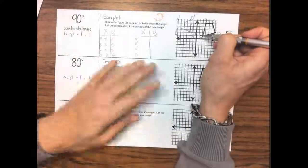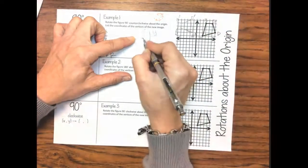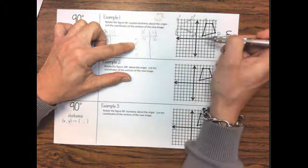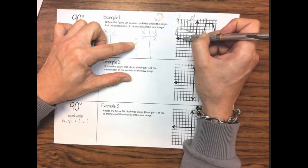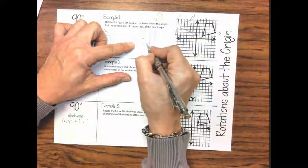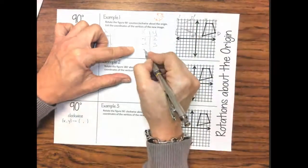Okay so let's check out a prime. a prime is a negative 1 positive 2. b prime is a negative 5 positive 3. c is a negative 5 positive 5.